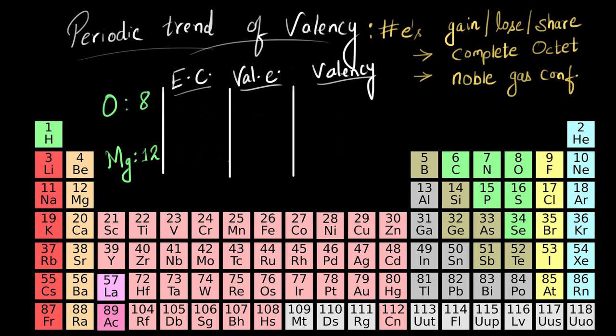Oxygen has eight electrons, so its electronic configuration is going to be 2,6. It has six electrons in its outermost shell. In a chemical reaction, only the outermost electrons participate, so we give them a special name — we call them valence electrons. So oxygen has six valence electrons.